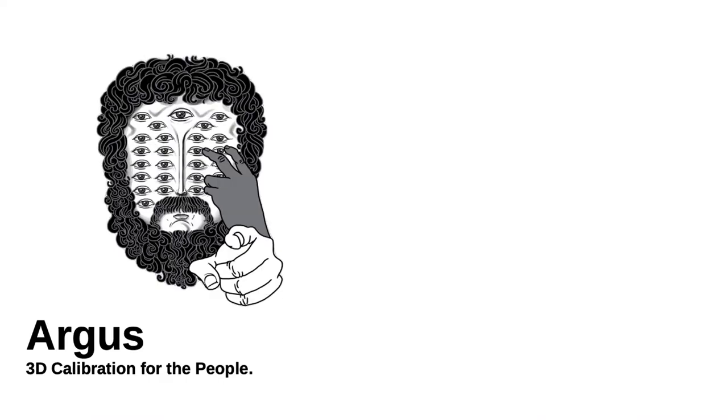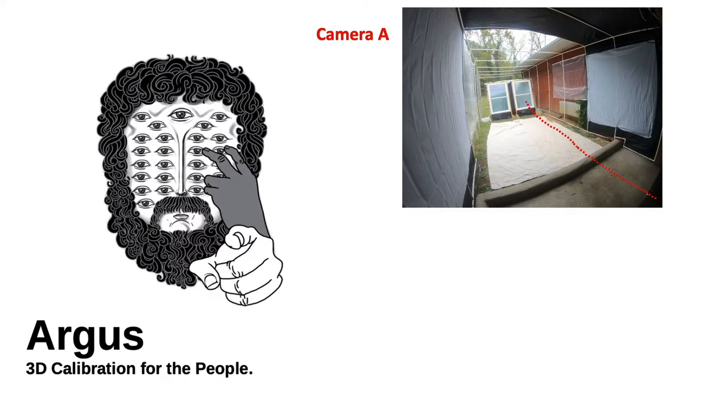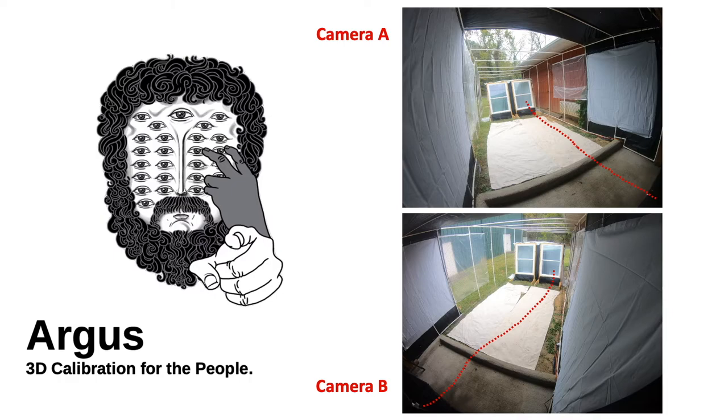From here, using Argus video analysis software, we are able to combine the tracks of each bird's flight from multiple camera angles to generate information about its velocity and trajectory in three-dimensional space.